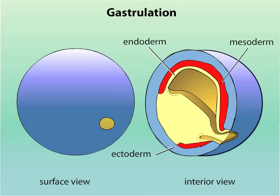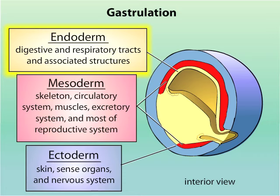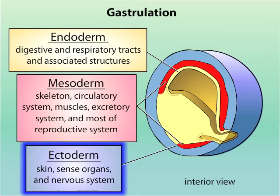The endoderm gives rise to the digestive and respiratory tracts and associated structures. The mesoderm gives rise to the skeleton, circulatory system, muscles, excretory system, and most of the reproductive system. The ectoderm gives rise to the skin, sense organs, and nervous system.